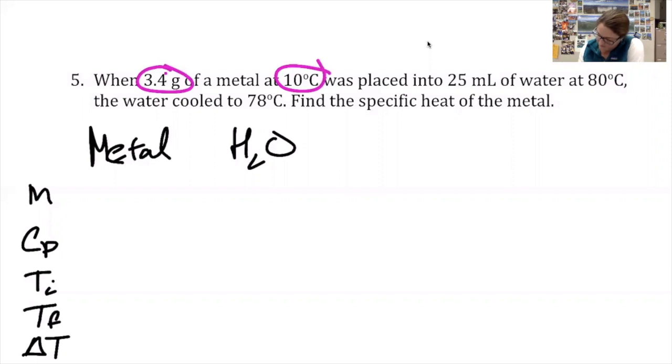For the metal, I have 3.4 grams of metal. Its starting temperature is 10 degrees Celsius. The specific heat of the metal is what I'm looking for.